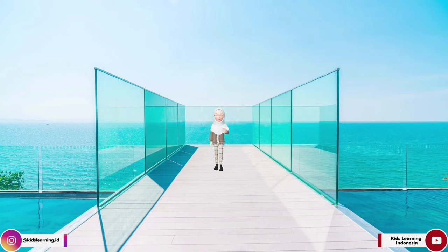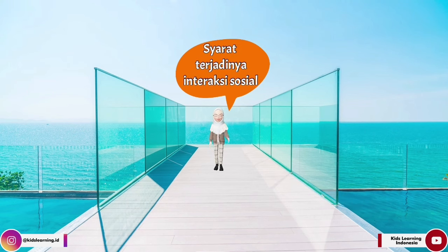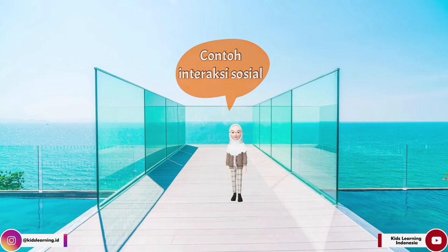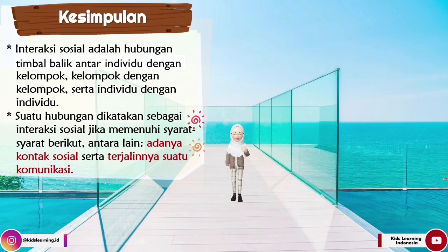Nah, teman-teman, tadi kita telah mengetahui dan memahami apa itu interaksi sosial, ciri-ciri dari interaksi sosial, jenis-jenis interaksi sosial, syarat terjadinya sebuah interaksi sosial, dan contoh dari masing-masing jenis interaksi sosial. Dapat kita simpulkan bahwa interaksi sosial adalah hubungan timbal balik antara individu dengan kelompok, kelompok dengan kelompok, serta individu dengan individu. Suatu hubungan dapat dikatakan sebagai interaksi sosial jika memenuhi syarat adanya kontak sosial serta terjalinnya suatu komunikasi.